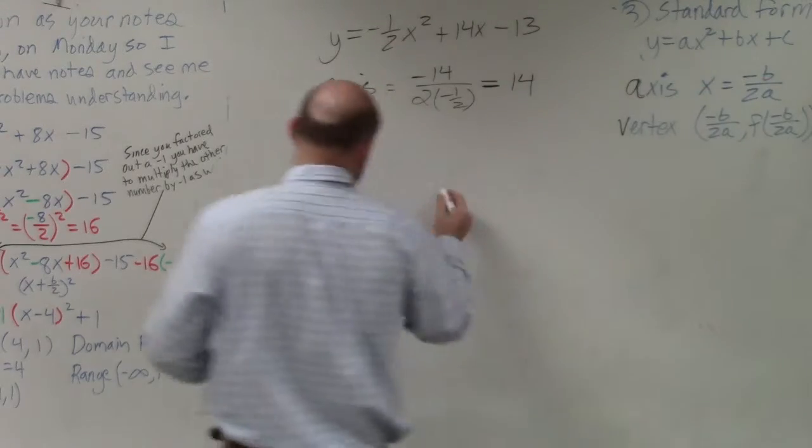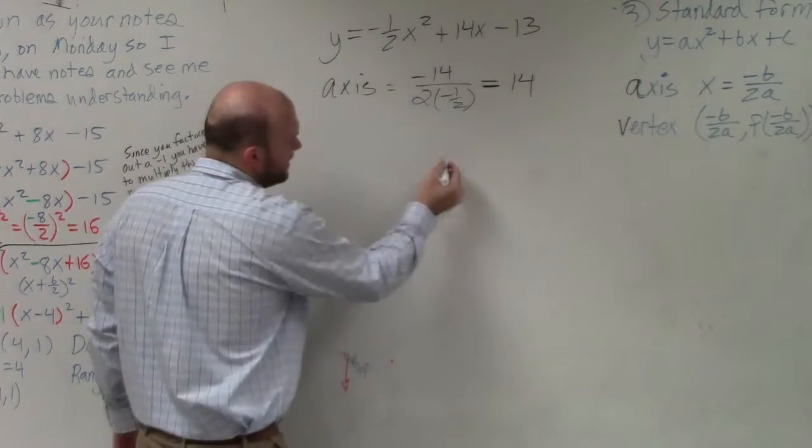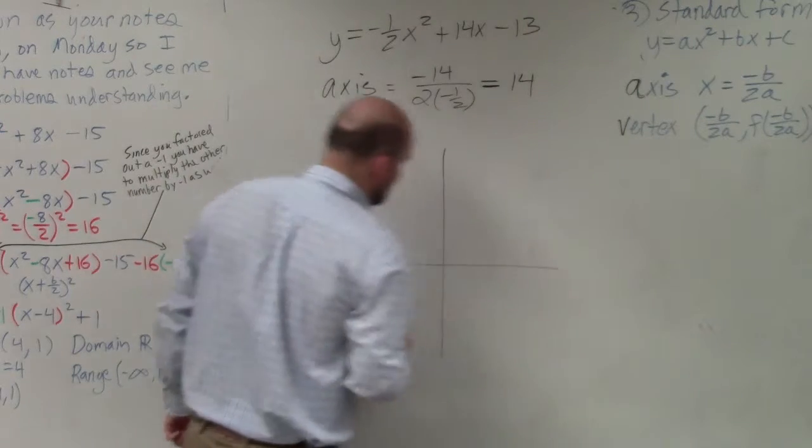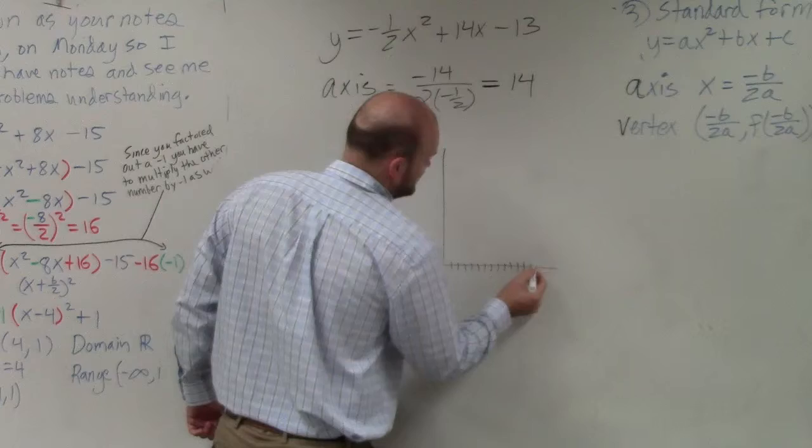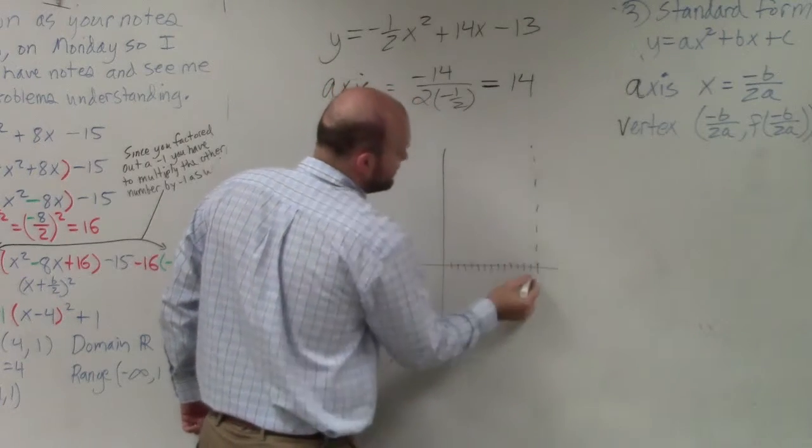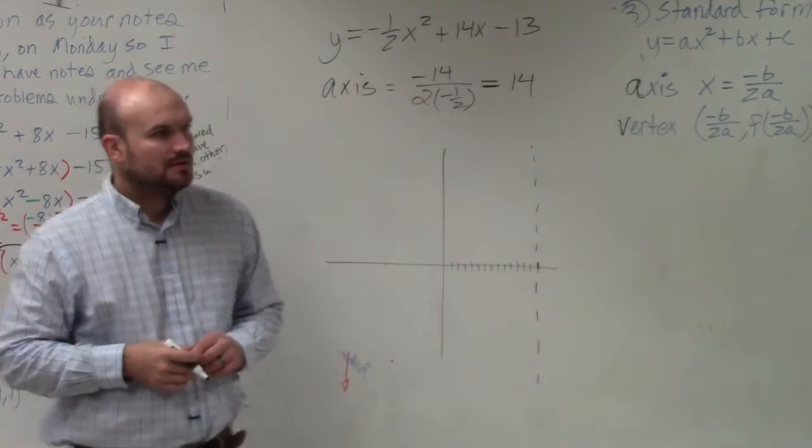So now, if I was going to graph this, let me talk about the graph here for a second. If I was going to graph this, 1, 2, 3, 4, 5, 6, 7, 8, 9, 10, 11, 12, 13, 14. That's where my axis of symmetry would be. Right? Now...